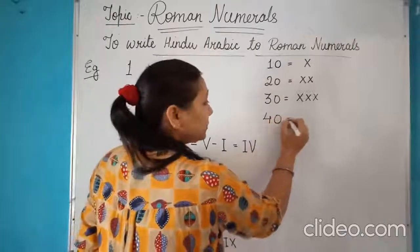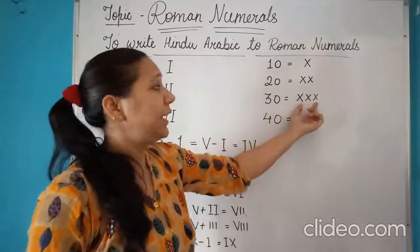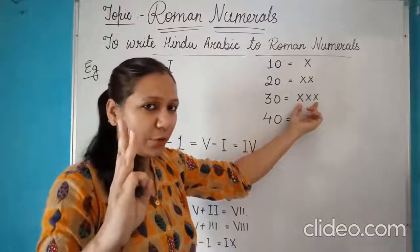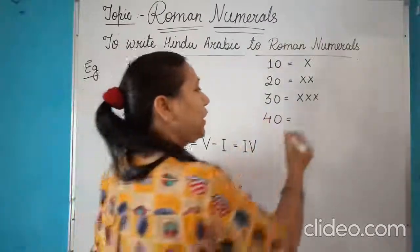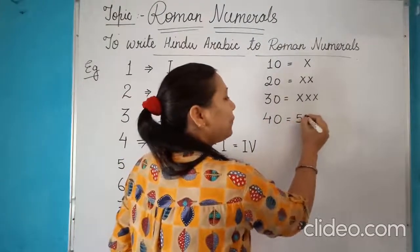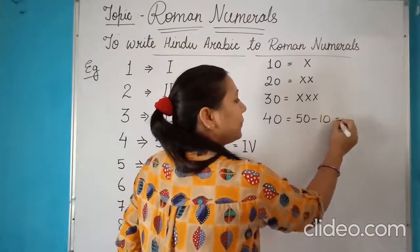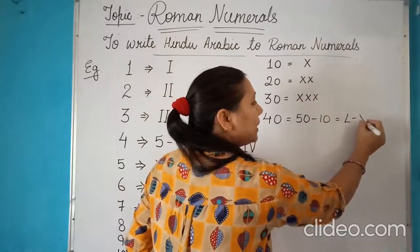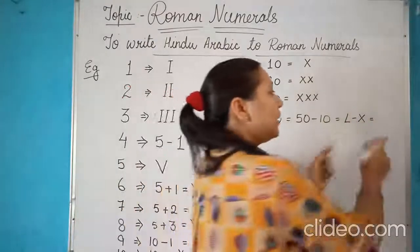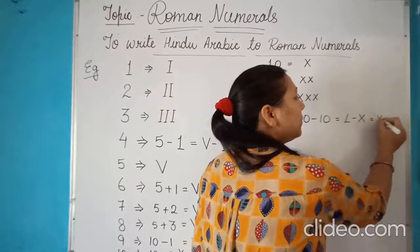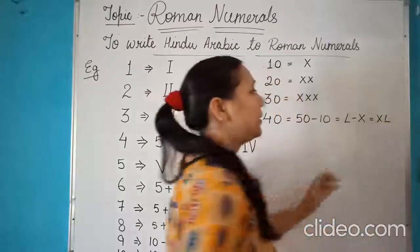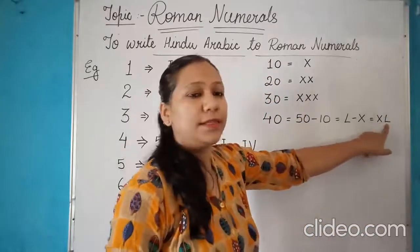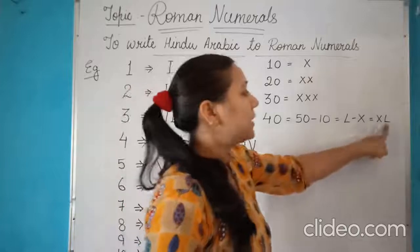Now for 40, as I said that repetition can be possible only 3 times. Now for 40, we will write it as 50 minus 10. The symbol for 50 is L and then minus X. According to subtraction rule, the symbol will become prefix to L. So it is XL. The symbol for 40 is XL.